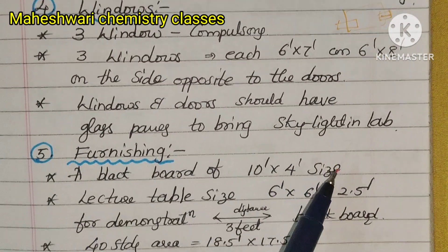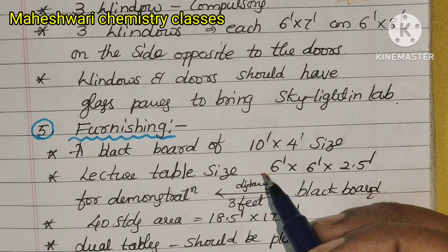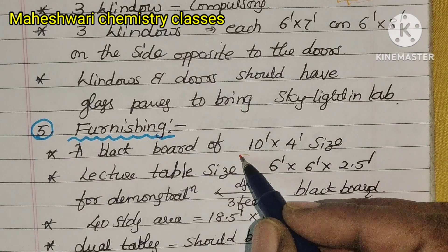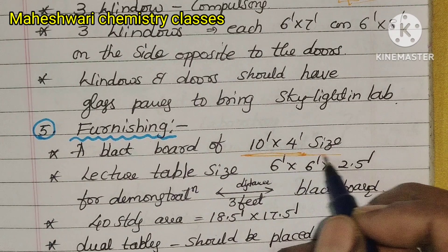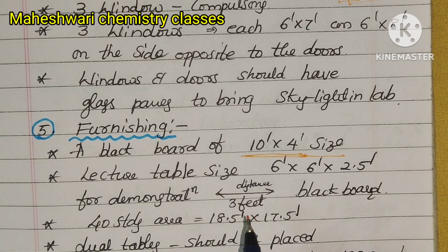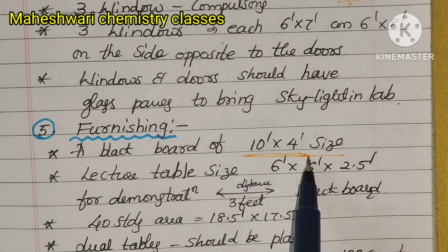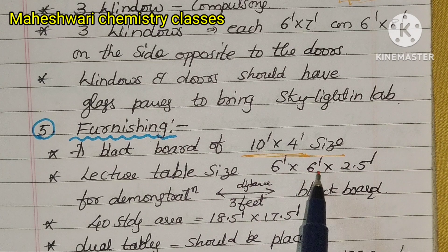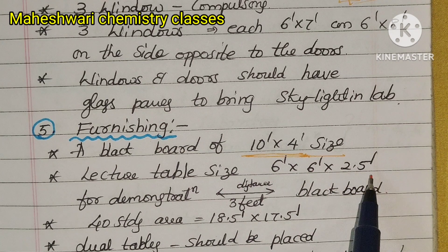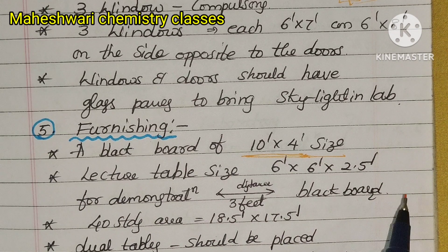Furnishing details: a blackboard of 10 feet by 4 feet is required. The blackboard size is 10 feet by 4 feet. The lecture table size is 6 feet by 2.5 feet. The demonstration distance from the blackboard is 3 feet.